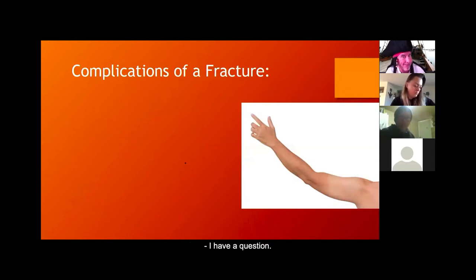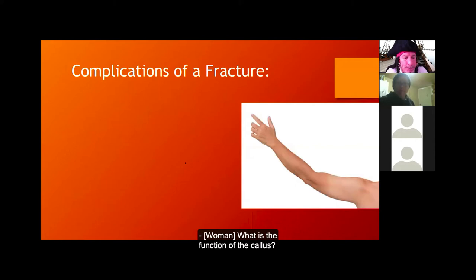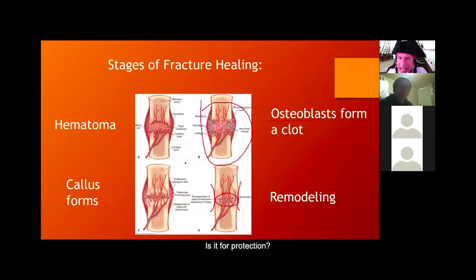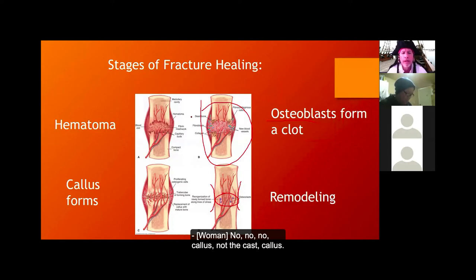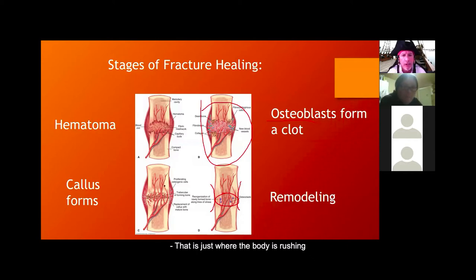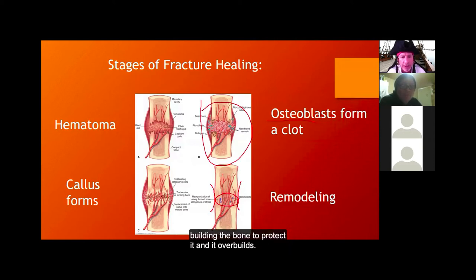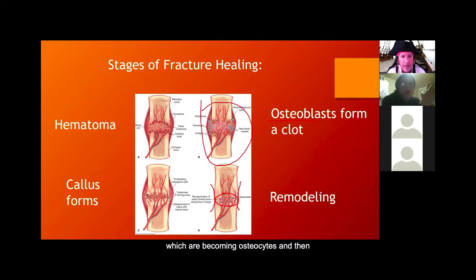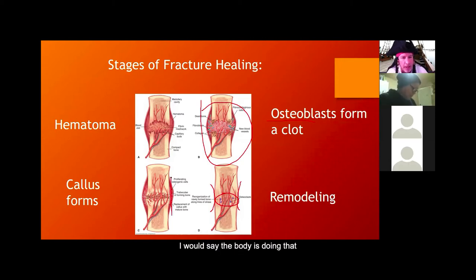Student question: what is the major function of the callus? The body rushes osteoblasts to the site, building bone to protect and overly stabilize it. The osteoblasts become osteocytes, and the body later trims off the excess. The callus over-builds to protect the site and keep it stable during the healing process.